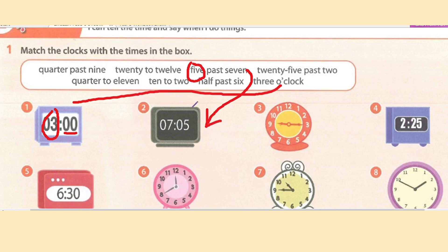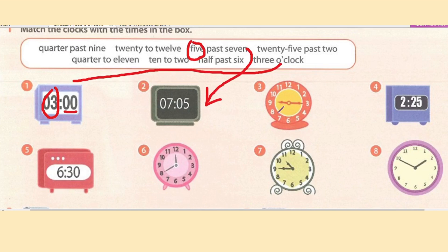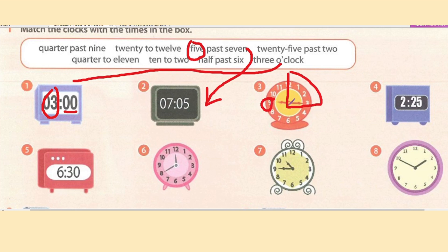When you see the word 'past,' it means the stated hour has been passed. Number three: the small hand is around nine and the longer hand is around three — that means 15 minutes have passed. So the answer is quarter past nine — 15 minutes after nine.